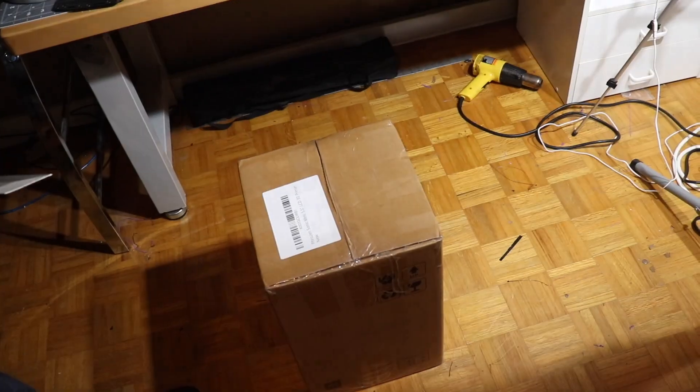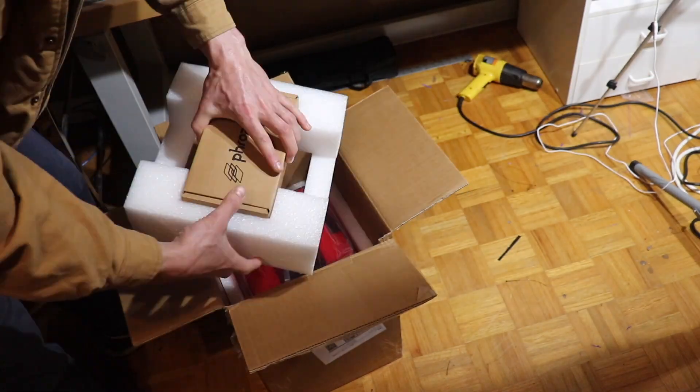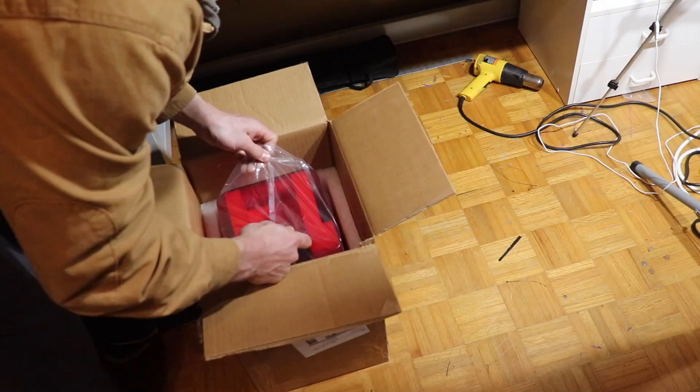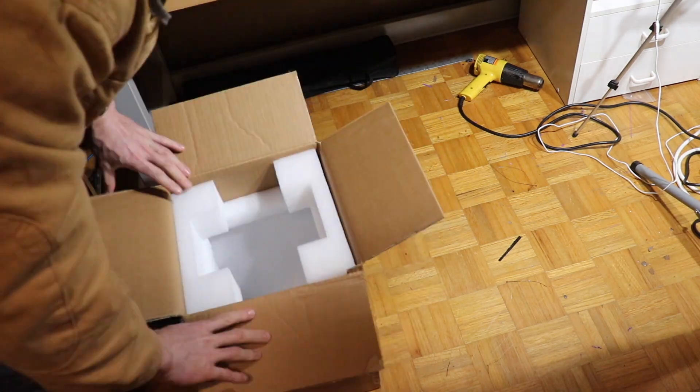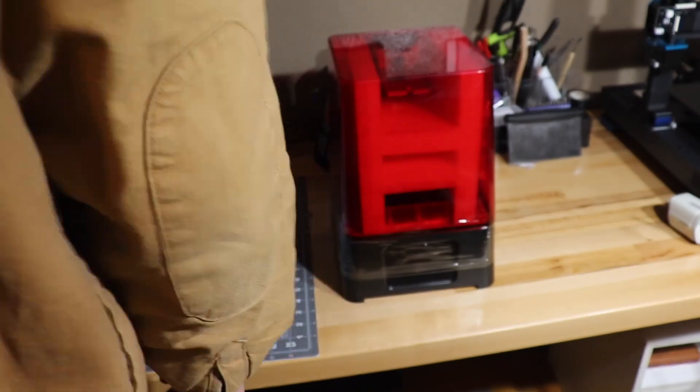Hey guys, today we're doing the unboxing of the Phrozen Sonic Mini and talking about the first couple of prints - the good, the bad, and the ugly of this machine. The contents include a funnel, gloves, two scrapers, a build plate, power cord, and a plastic vat.